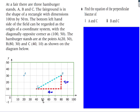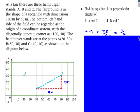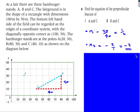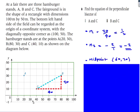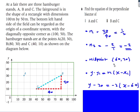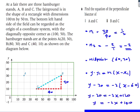For the perpendicular bisector of B and C: going across by 40 and up by 20, the gradient is 20/40 = 1/2. The perpendicular gradient is −2. The midpoint is x = 60, y = 20. Using y − 20 = −2(x − 60) simplifies to y = −2x + 140.